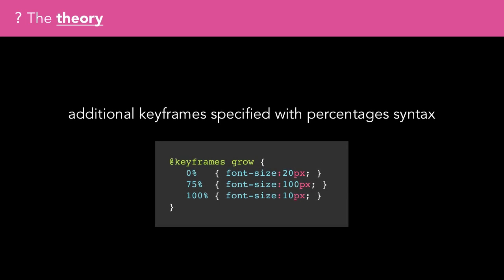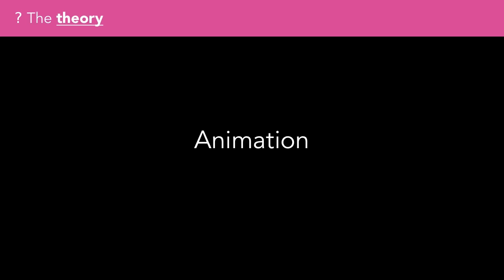Additional keyframes can be specified using a percentage syntax. For example, if the animation duration was 10 seconds, over the first 7.5 seconds the font size of the element would grow to 100 pixels, and then over the next 2.5 seconds it would shrink back down to 10 pixels. It's worth noting you can specify as many properties and as many keyframes as you'd like.